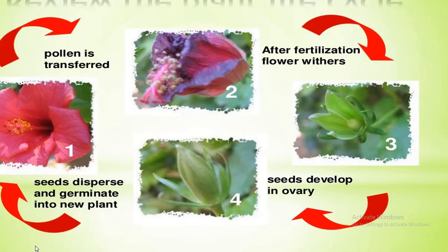This is the life cycle of plants. It shows that pollen is transferred from the anther to the stigma, and there will be fertilization. After fertilization, the flower will wither and only the ovary will remain. Then there will be seed development in the ovary. After the formation of seeds, the seeds will disperse and germinate into a new plant.